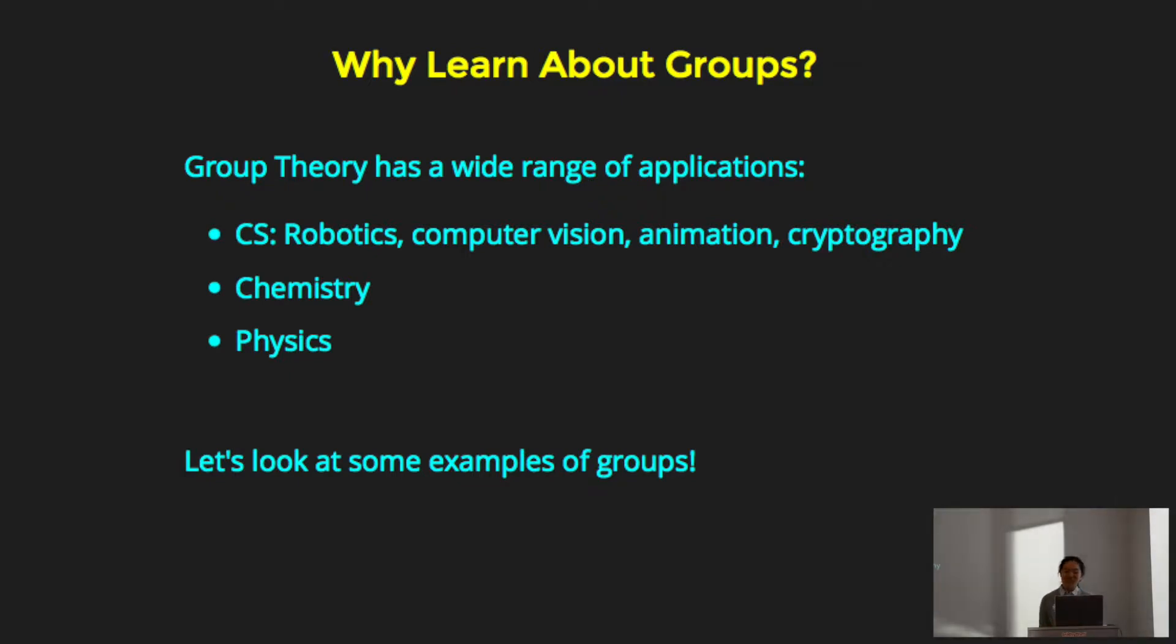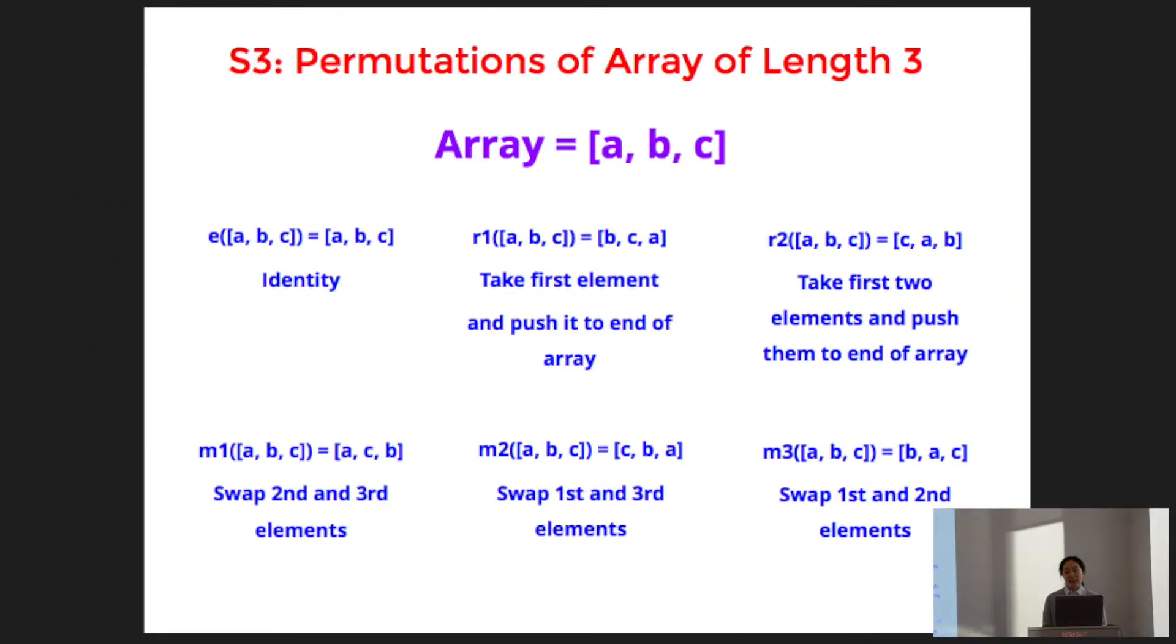Now let's look at some examples of groups. One important group is called S3, and that is the group of permutations of an array of length 3. And this group consists of all possible ways that you can rearrange three elements. And say that our array consists of a, b, and c. And again, it doesn't matter what a, b, and c are. We've got the identity element, which is the permutation that just leaves the array as is. We'll call that e.